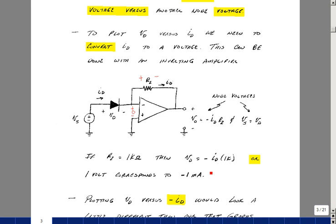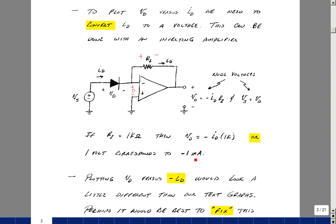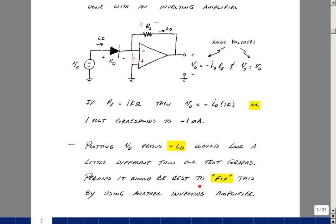Suppose we used a 1000 ohm resistor, then for one volt out we would have corresponding one milliamp of current. The problem is that there's a minus sign here, so we'd be plotting really the negative of what we want. This would put us, instead of in the first quadrant, it would put us in the fourth quadrant. So there's some way to fix that up, so we could plot the curves as we had them on page one.